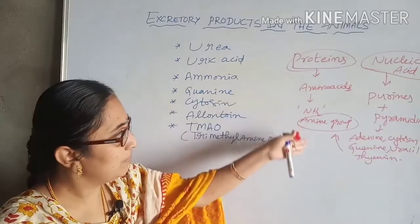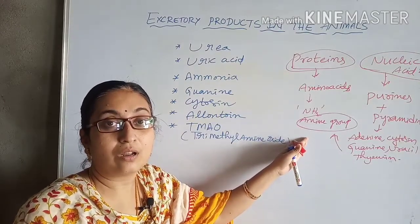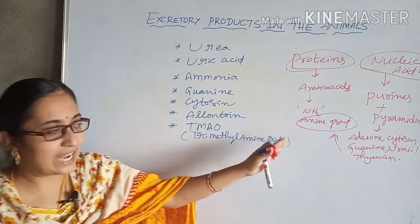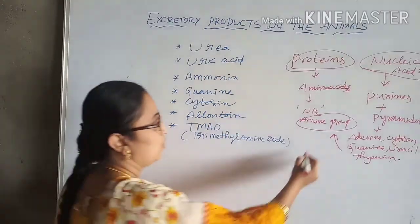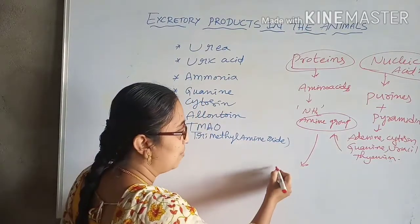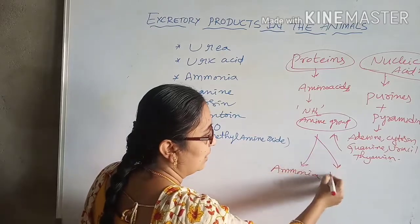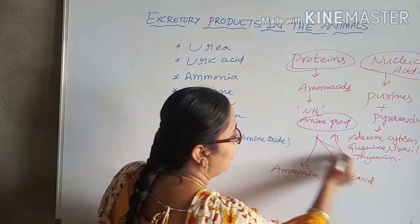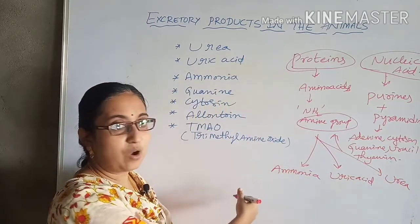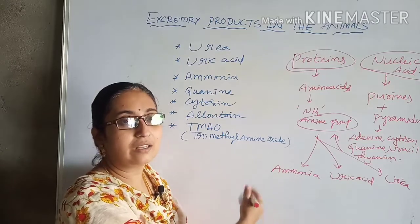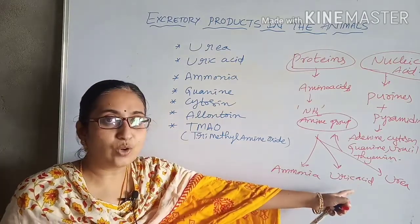This amine group is very harmful to be stored in the blood, so it must be expelled outside. In some organisms it is expelled as ammonia, in some as uric acid, and in some as urea. Based on the excretory product released, animals are divided as ammonotelic, ureotelic, and uricotelic.